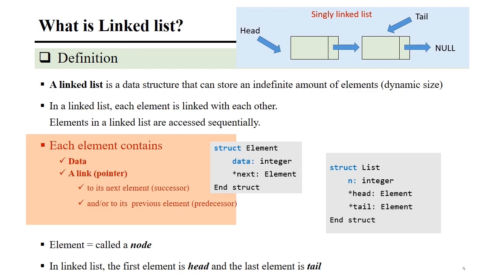It is important to know that a linked list consists of many elements. Each element should consist of data and a pointer. The data is whatever we want to store. If we have many data fields, we create a new data structure to represent this element. The pointer is used to point from one element to another, as elements are dynamically created, and we need to connect them together so that we can access them later.